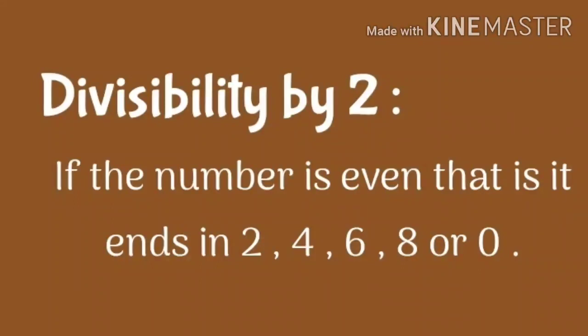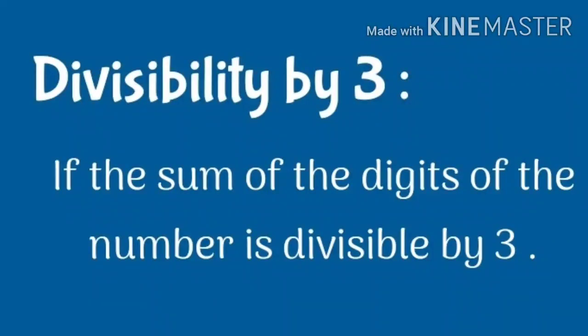First was divisibility by 2: if the number is even, that is it ends in 2, 4, 6, 8, or 0, then the given number is divisible by 2. Otherwise it is not divisible by 2. Next is divisibility by 3: if the sum of the digits of the number is divisible by 3, then the given number is divisible by 3. We add every digit of the given number, and if their sum is divisible by 3, then the number is also divisible by 3.